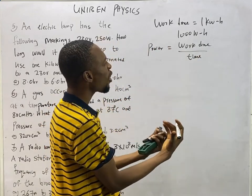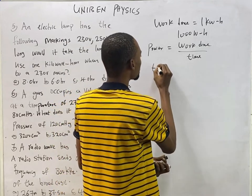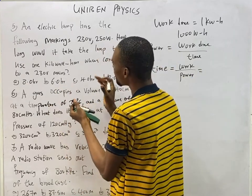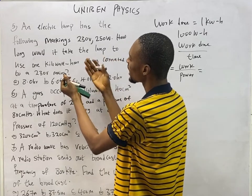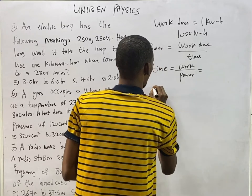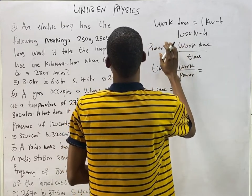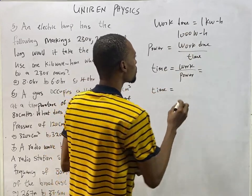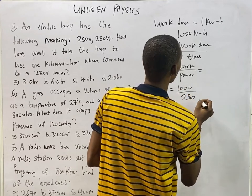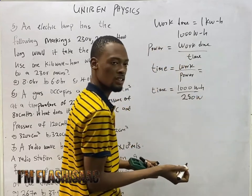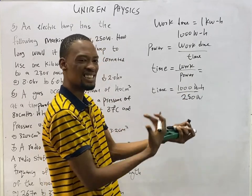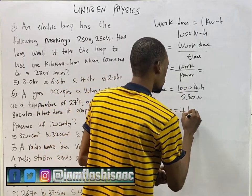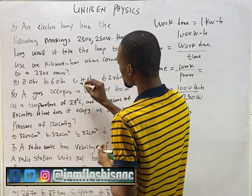Since power = work/time, time = work/power. The power is 250 watts and work done is 1000 watt-hours. So time = 1000/250. The watt units cancel, leaving hours, giving time = 4 hours. That is option C.